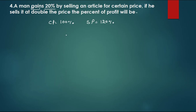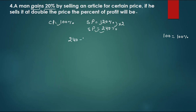If he sells at double the price, we multiply SP by 2: 120% × 2 = 240%. Cost price remains 100%. So the new selling price is 240% and cost price is 100%. The profit is 240% minus 100% = 140%. Therefore the profit percent is 140%.